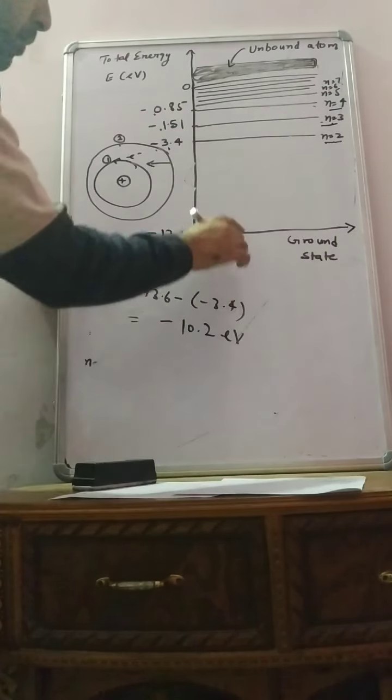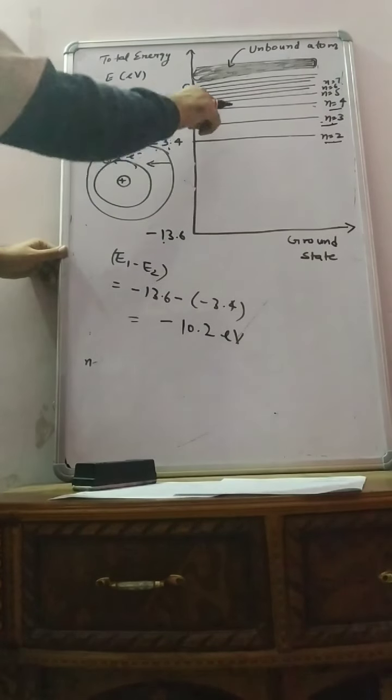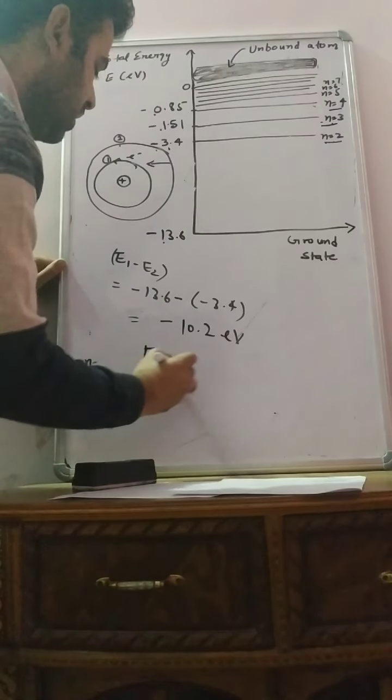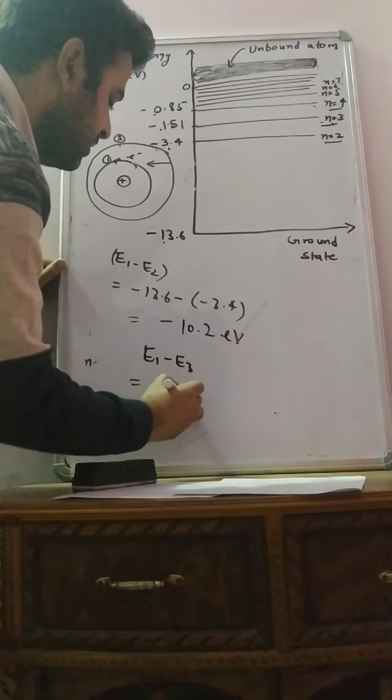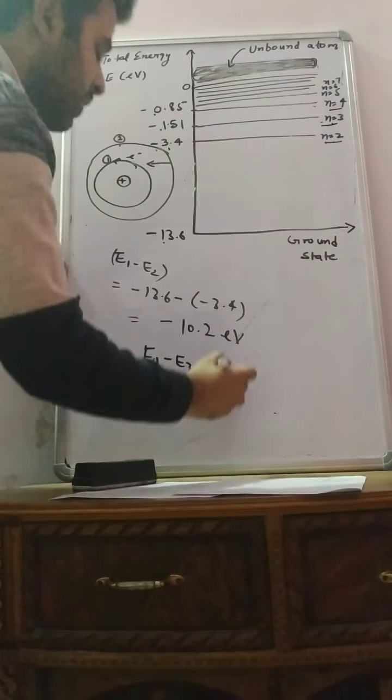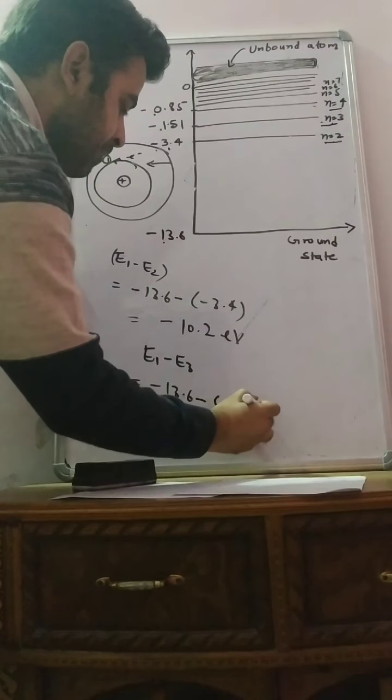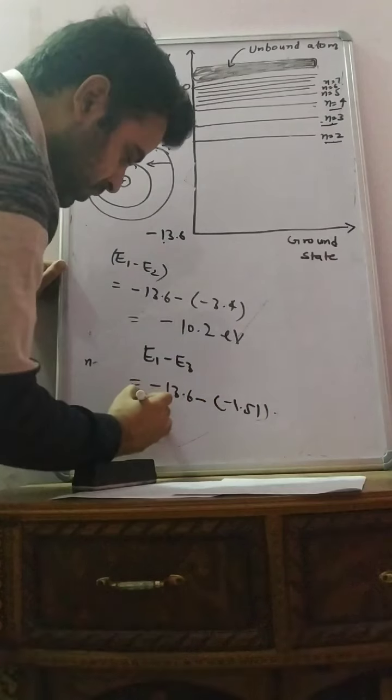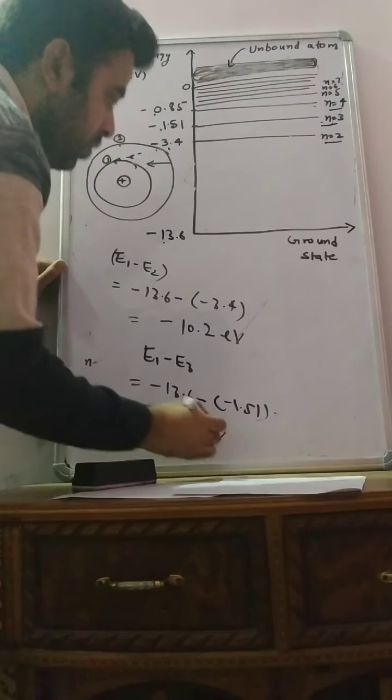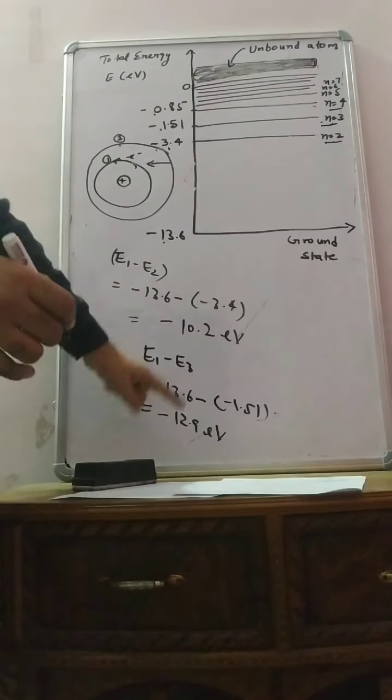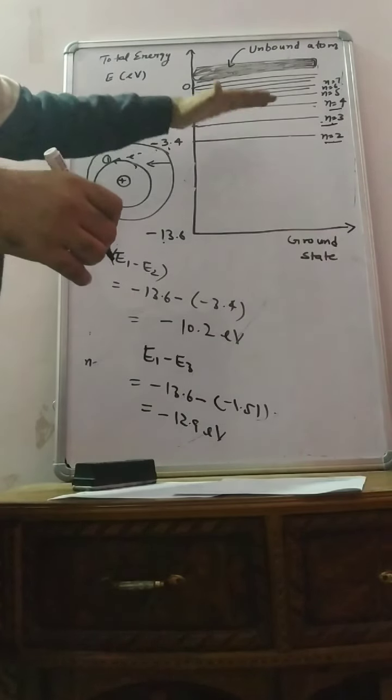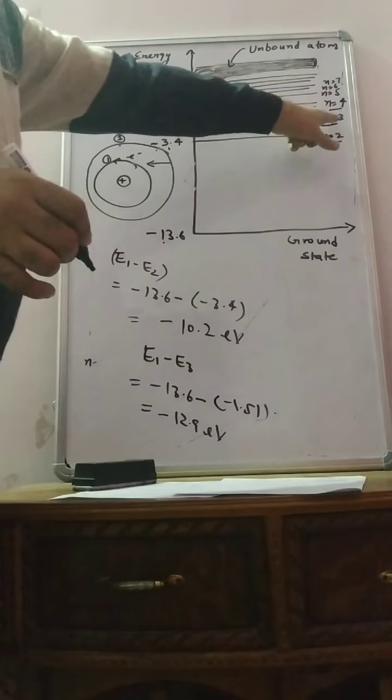Similarly, releasing an electron to the second excited state, how much energy needs? The value comes out to be minus 12.9 electron volt. This is the amount of energy to the second excited state.